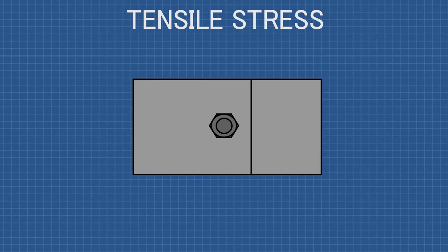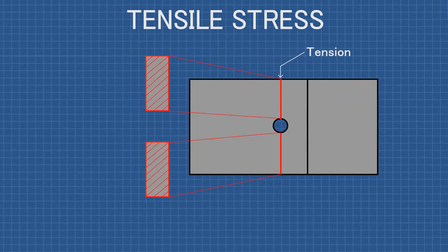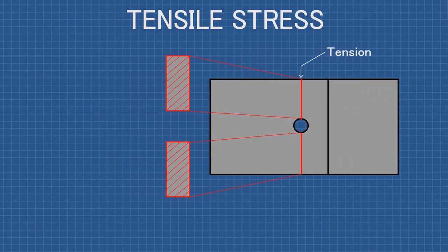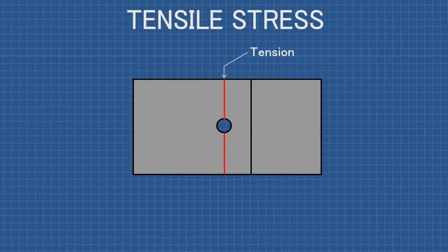Next let's look at the tensile or tearing stress that happens within the base materials. This view is looking down from the top of the plates that the fastener is holding together. As forces are added to the plates, the fastener transfers the opposing forces to each plate and creates a tension along this plane within the material. The cross-section of this plane is A equals W minus D times the thickness of the plate, where W is the width of the plate and D is the diameter of the fastener. If the tensile stress exceeds the tensile strength of the material, it will cause tearing that could lead the joint to fail.